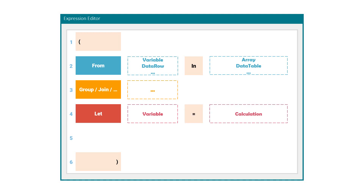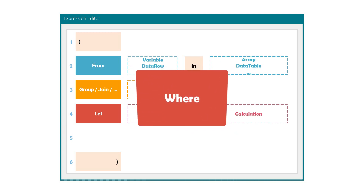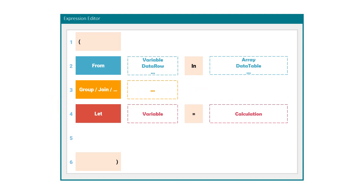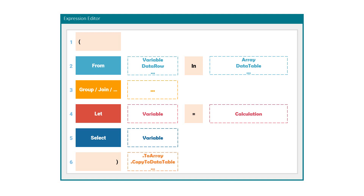As you can see, there is no where statement in the query, but you can insert this — it then comes before the let statement. The last statement is select. After the data has been read from the data source and prepared, it can be selected to have it as an output. At the end, after the brackets, a function is set to change the output to a certain data type.